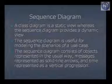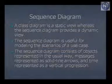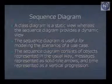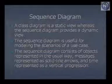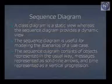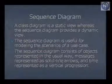The sequence diagram is useful for modeling the scenarios of a use case. The sequence diagram consists of objects represented in the usual way, messages represented as solid lines, and time represented as a vertical progression. In the sequence diagram, we take various objects involved in the system plus the time dimension — what is the duration of the time and what are the messages that need to be sent from one object to other objects.